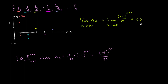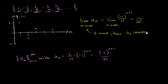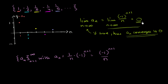I haven't proved this yet — I am just claiming it is true. But if the limit of a sub n as n approaches infinity is 0, then we can say that a sub n converges to 0. If the limit as n approaches infinity did not go to some finite value — and I haven't rigorously defined how we define a limit — then we would say that a sub n diverges.